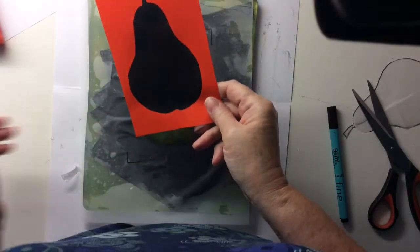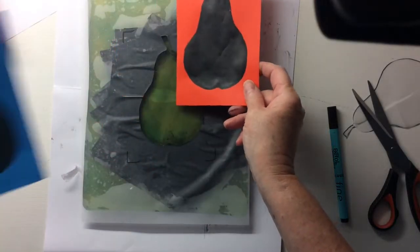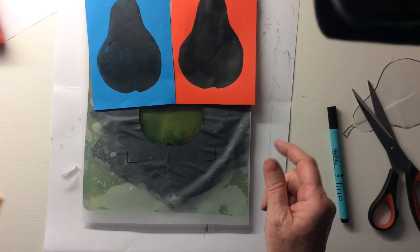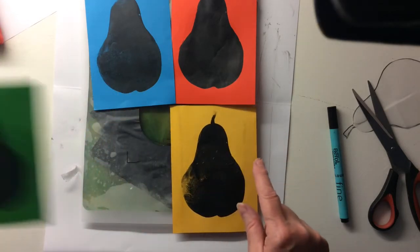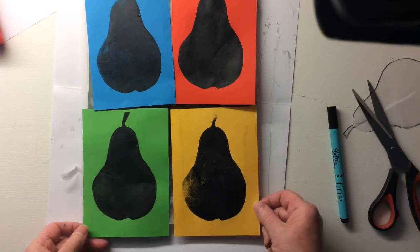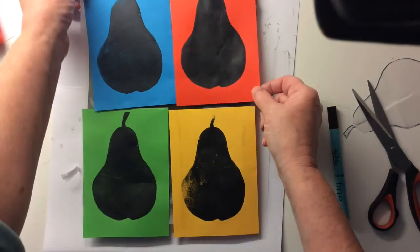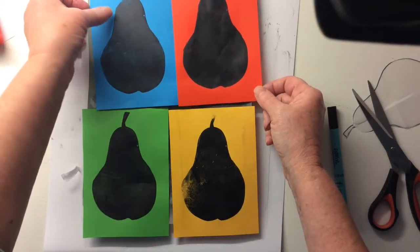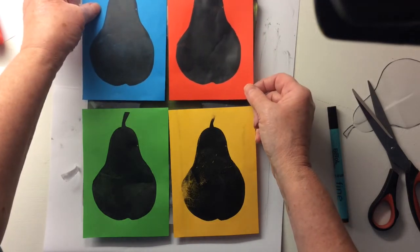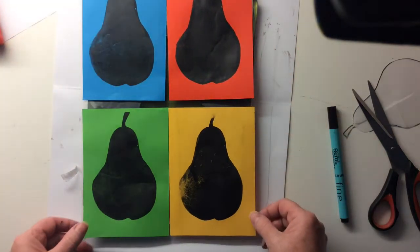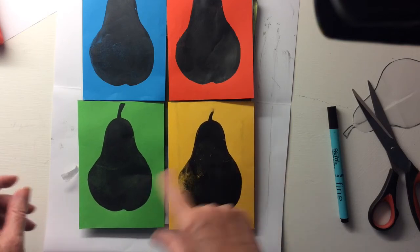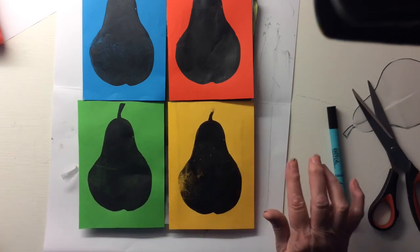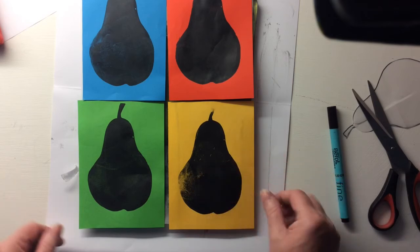So now I've got all my four different coloured pear prints. The first one is often the worst one and that's because it takes a little while for the jelly plate to get warmed up. If I wanted to I could do another one on yellow paper, but I actually quite like that one.